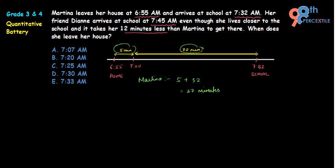Deanne reaches school at 7:45 AM and it takes her 12 minutes less than Martina. Since Martina takes 37 minutes, Deanne should take 37 − 12 = 25 minutes to reach school.